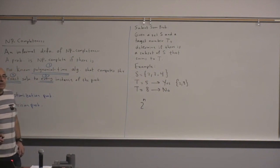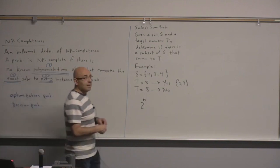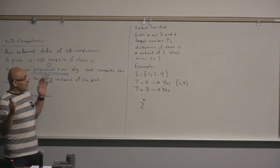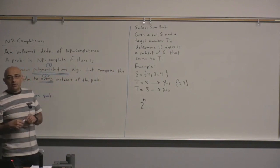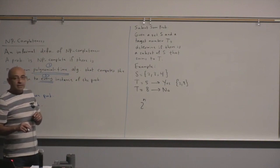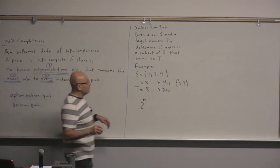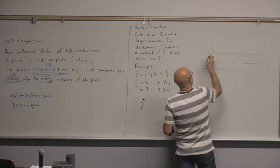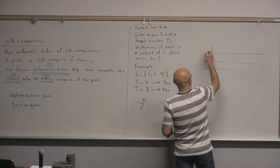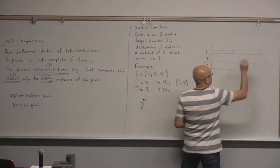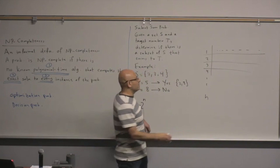This problem is similar to the zero-one knapsack problem. In fact, it does have a dynamic programming solution similar to the DP solution of the zero-one knapsack problem. For the subset sum problem, you will have the items in the rows — item 1, 2, 3 through n — and the number of columns will be equal to the target T.